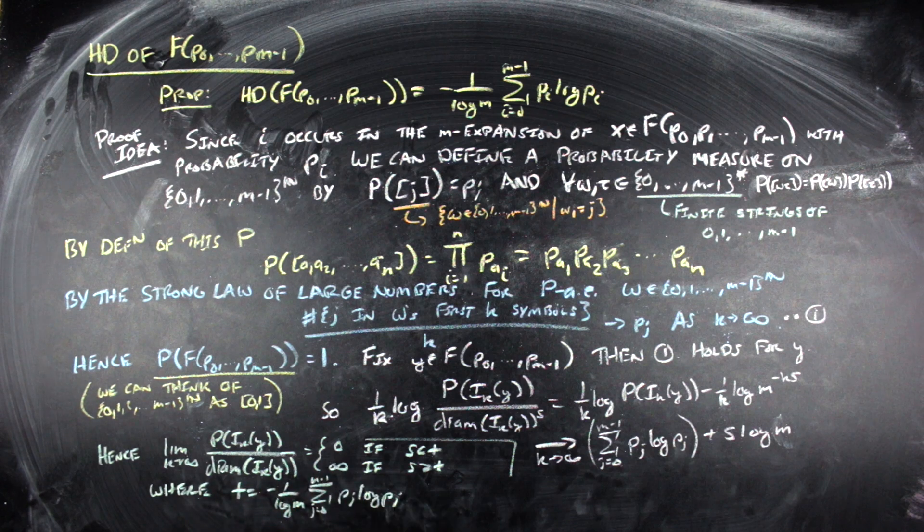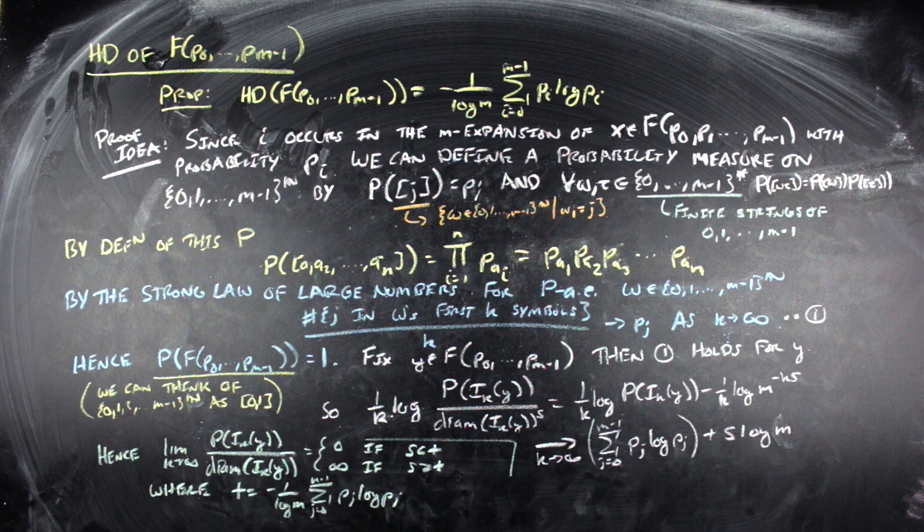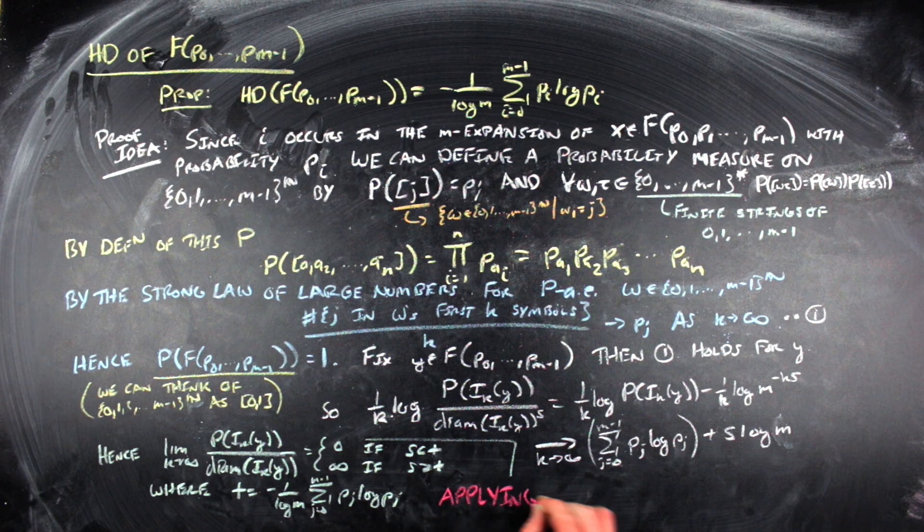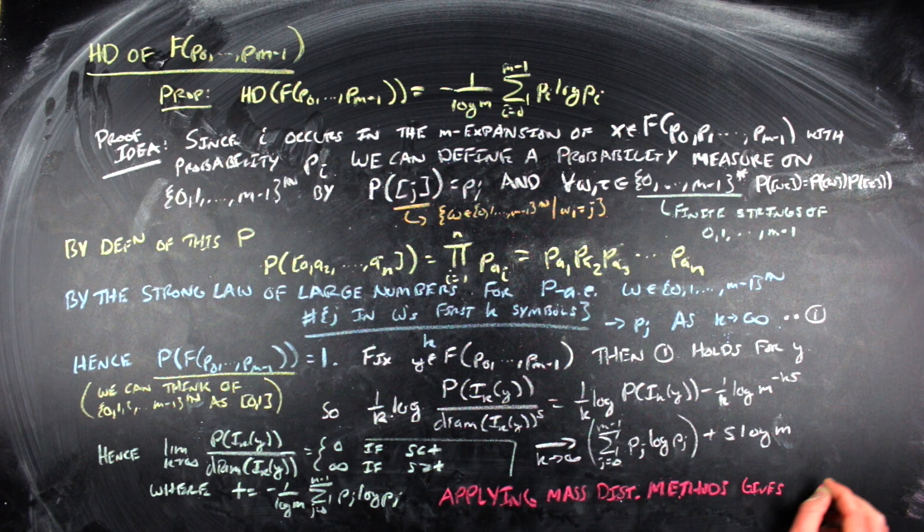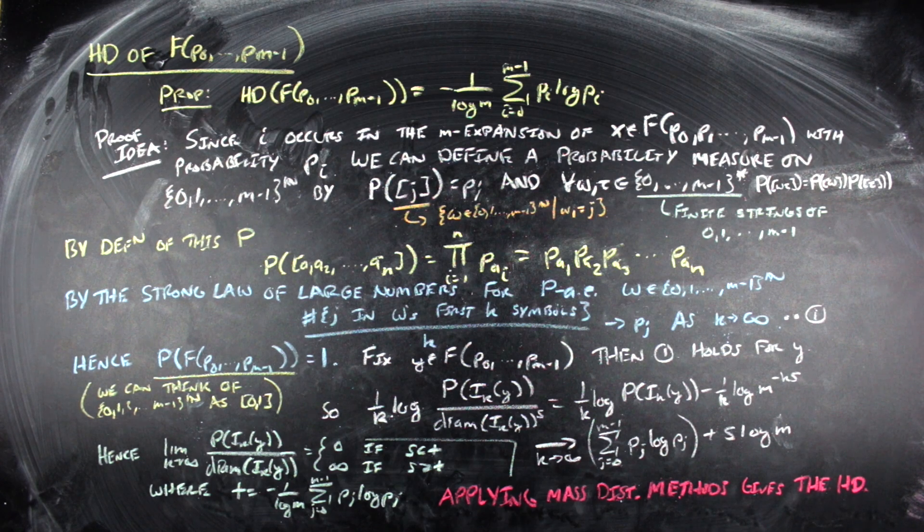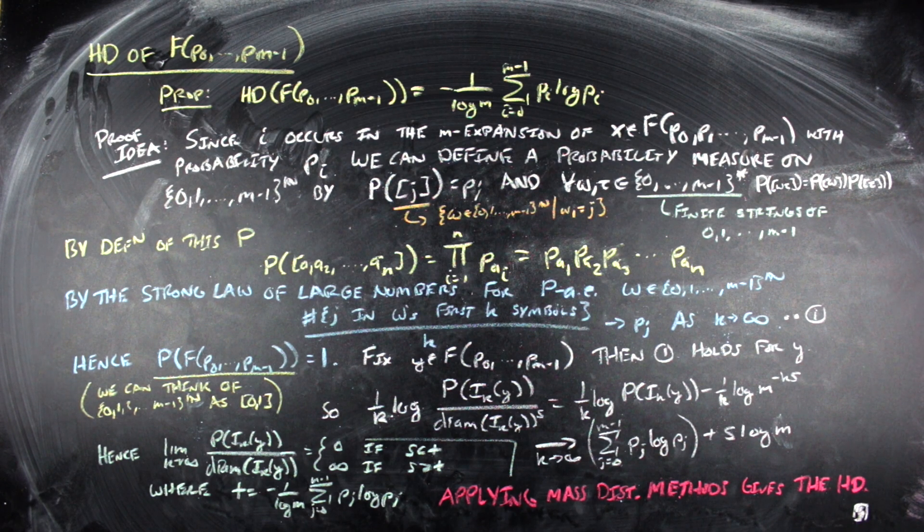And then to finish the sketch of this argument, what you would need to do next is you would need to do some mass distribution style arguments. So using mass distribution methods, one can show that the Hausdorff dimension is actually equal to this T value. And that would complete the proof.